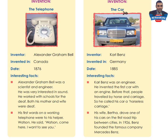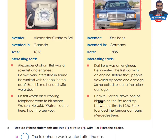Invention B — The Car. Inventor: Karl Benz. Invented in Germany. Date: 1885. Interesting facts: Karl Benz was an engineer. He invented the first car with an engine. Before that, people traveled by horse and carriage, so he called his car a 'horseless carriage.' His wife Bertha drove one of his cars on the first road trip between cities. In 1926, Benz founded the famous company Mercedes-Benz.